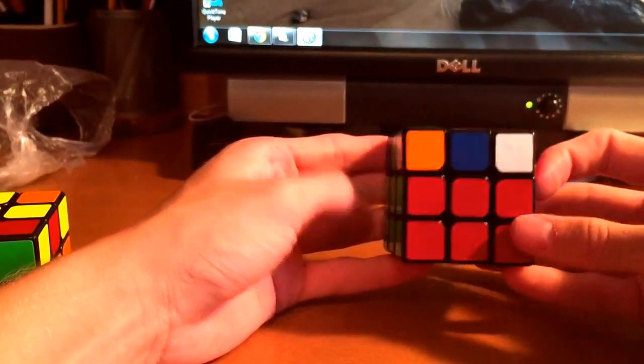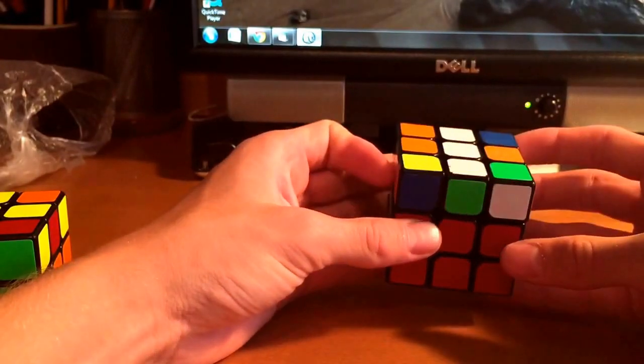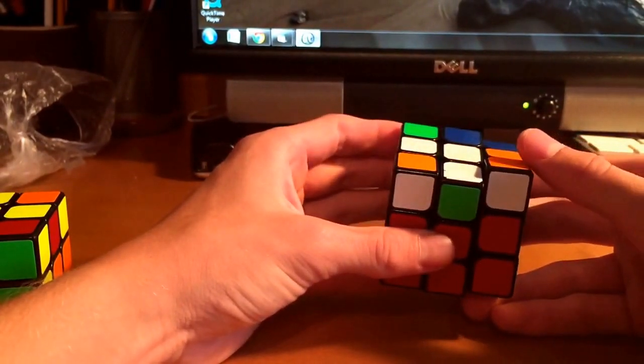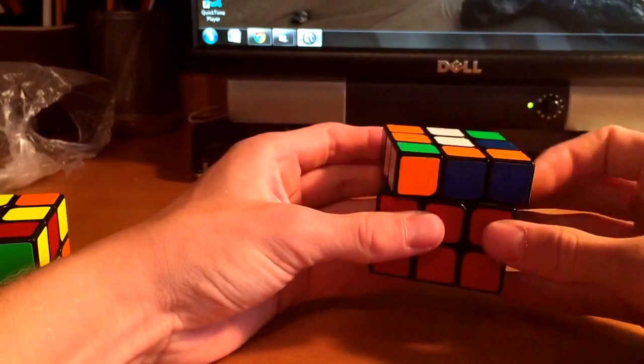But what is much more efficient in this sort of sense is to actually rotate this way and do U' and then hide it like that, and pair it up that way.